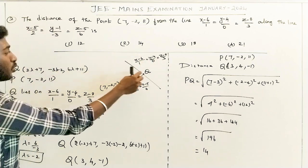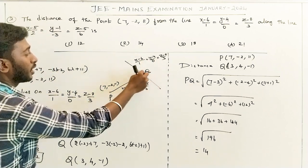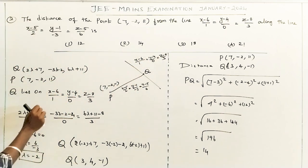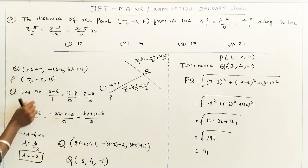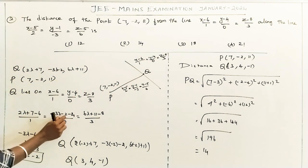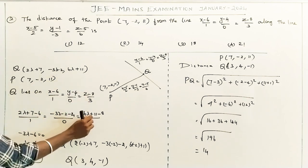This line is the line. So instead of x, y, z, we will substitute. So x is 2λ-7, y is 3λ-2, z is 6λ-11. So we will substitute.